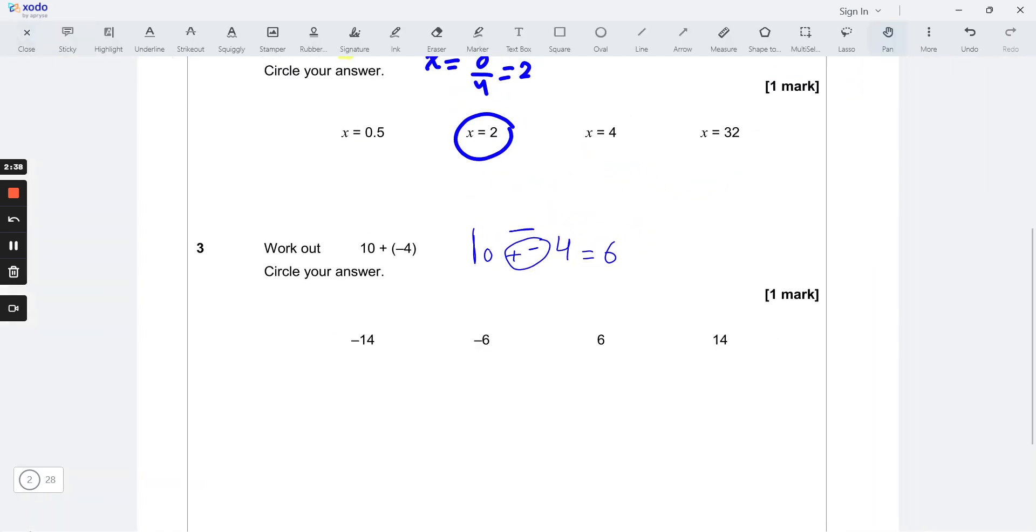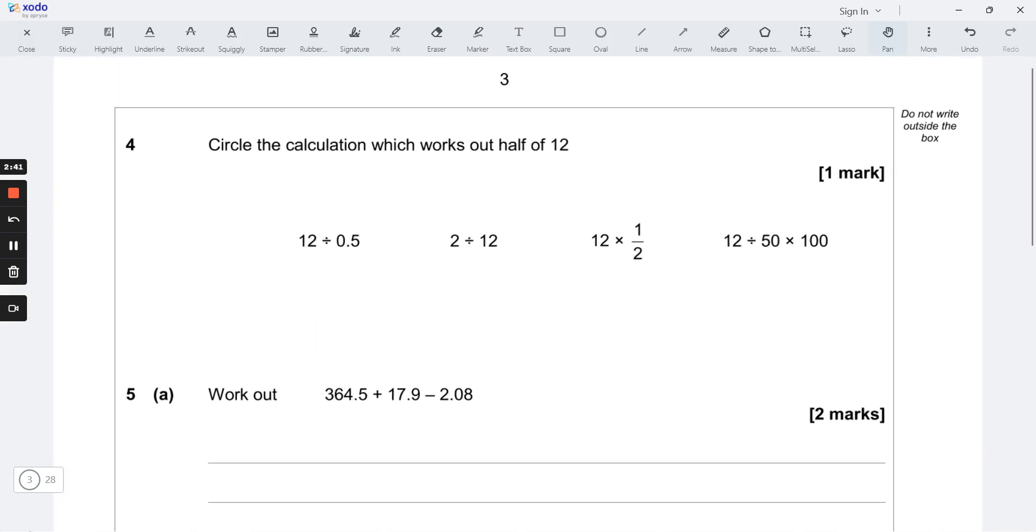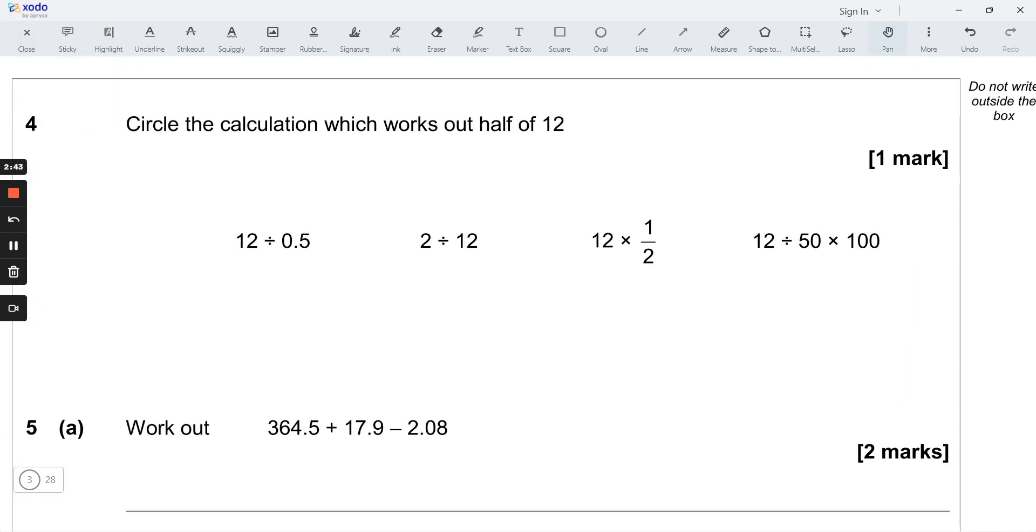Question 4: circle the calculation which works out half of 12. Half of 12 is easy. Half means 1/2, of means multiplication. So this one here, because half times 12 or 12 times half equal to each other, because multiplication is commutative. 3 times 2 equals 6, 2 times 3 equals 6, so it's the same.